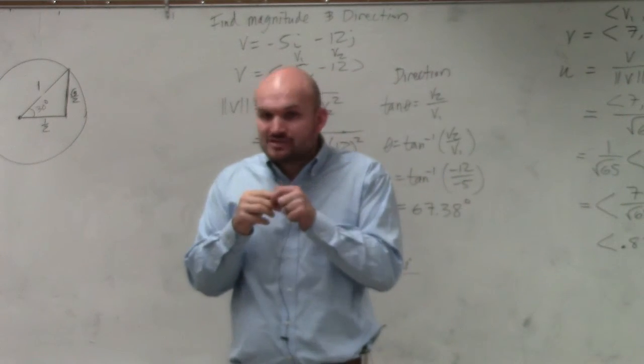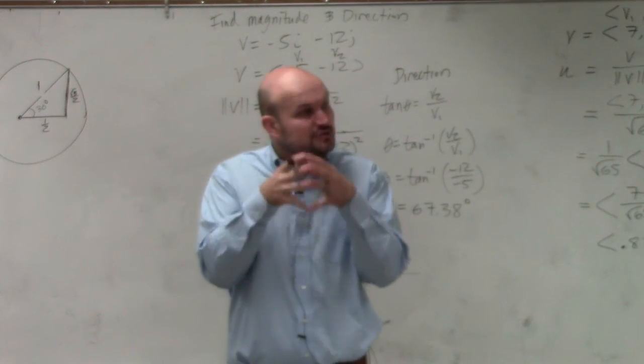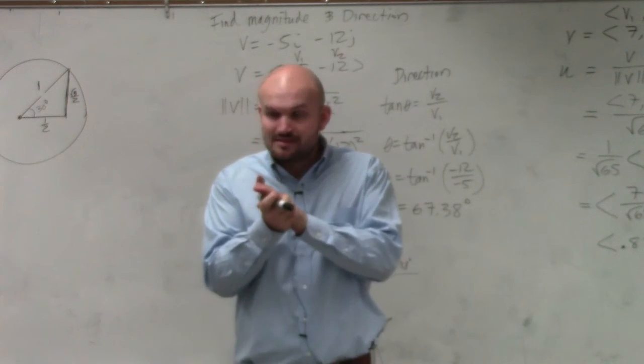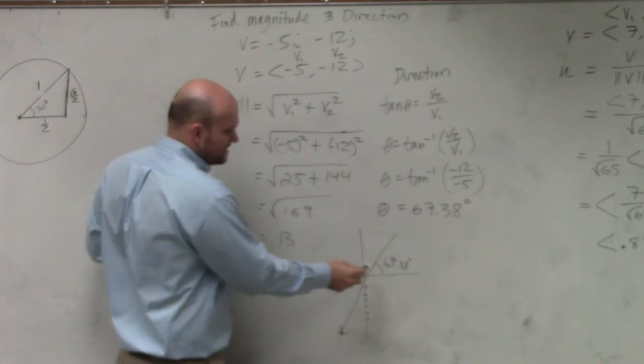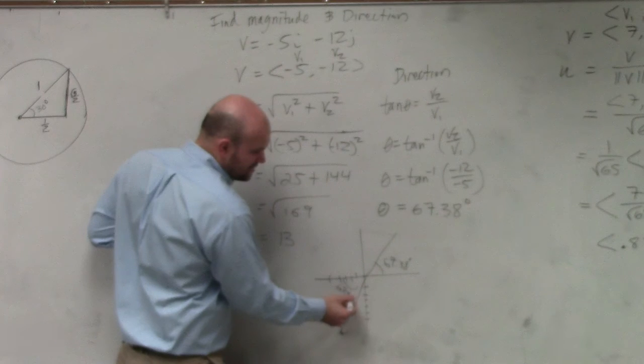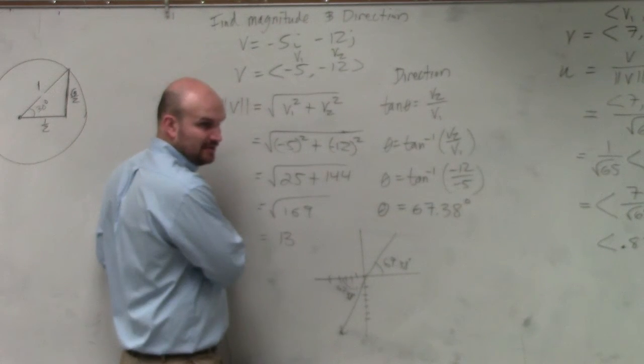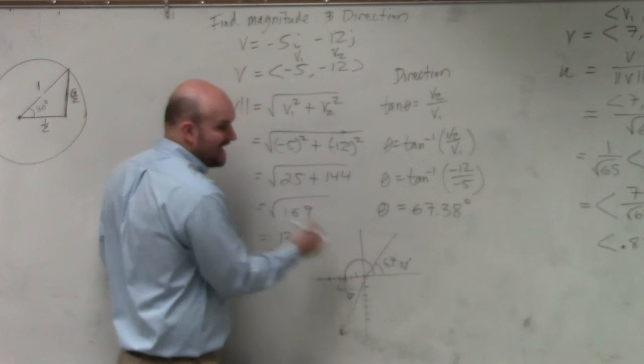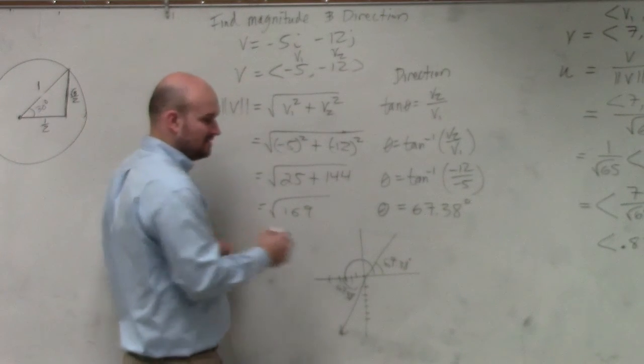If you guys remember, when we did inverse tangent, inverse tangent is restricted within the first and the fourth quadrants. So what you guys need to understand is, this 67 degrees is really the same as that 67 degrees. Those are reference angles of one another. So then how do I find what that actual angle is? What do I need to add to 67.38? 180.